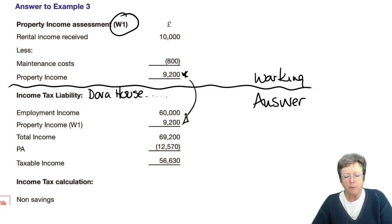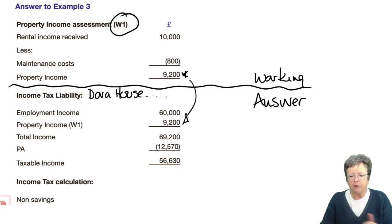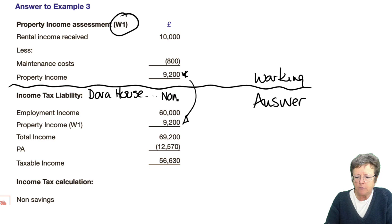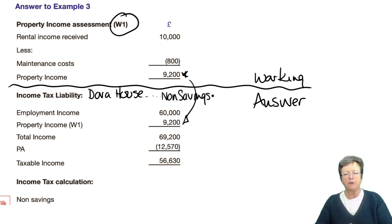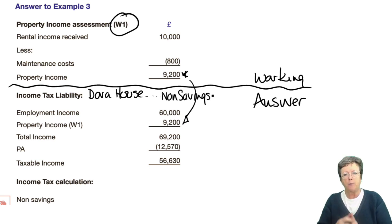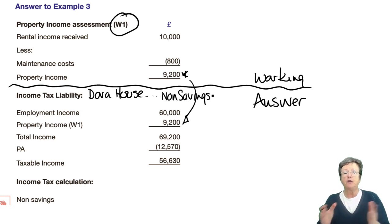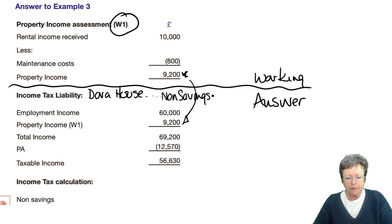Her employment income we've copied from the question. Property income and employment income are both non-savings income, so you'd only need one column for this. Chapter 2 explains the four-column approach. I would advise that you watch these lectures in the order in which they are in the manual. Employment income and the property income gives a total income of £69,200.